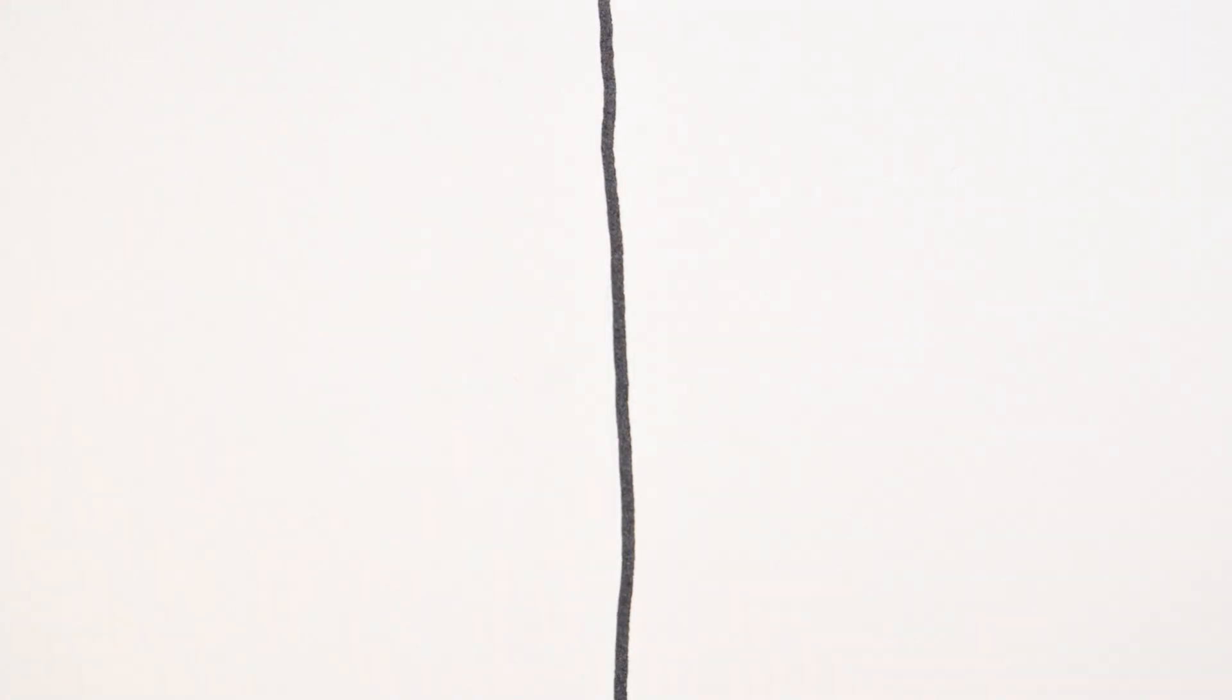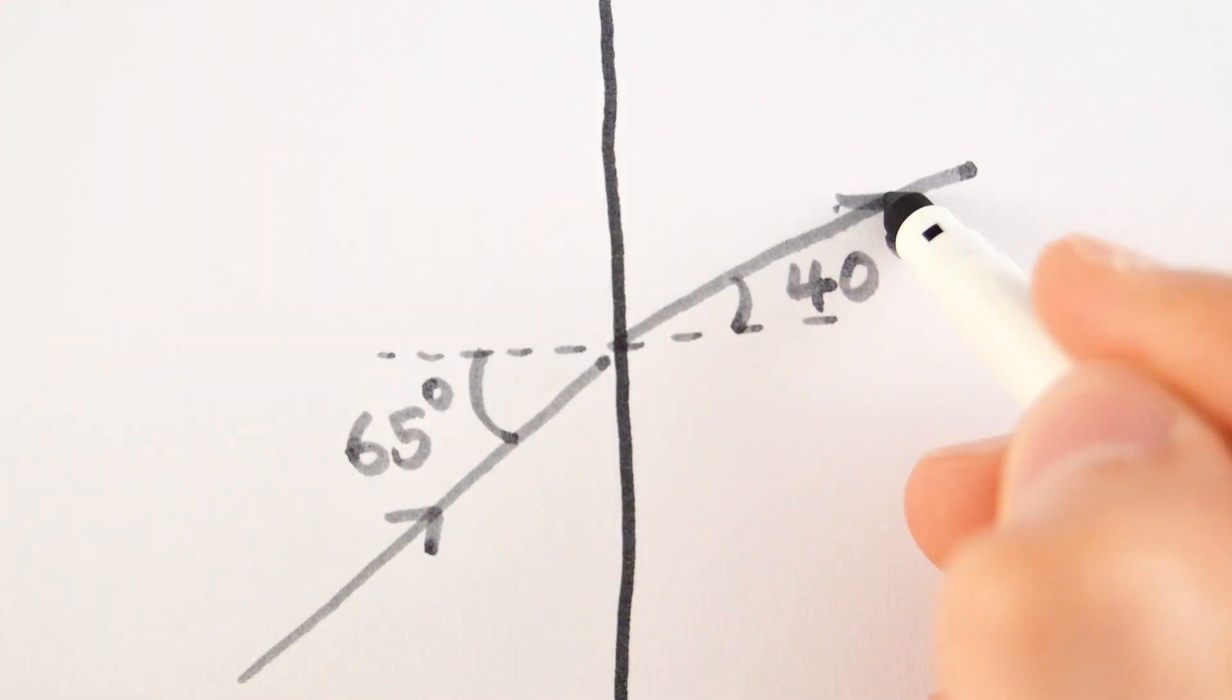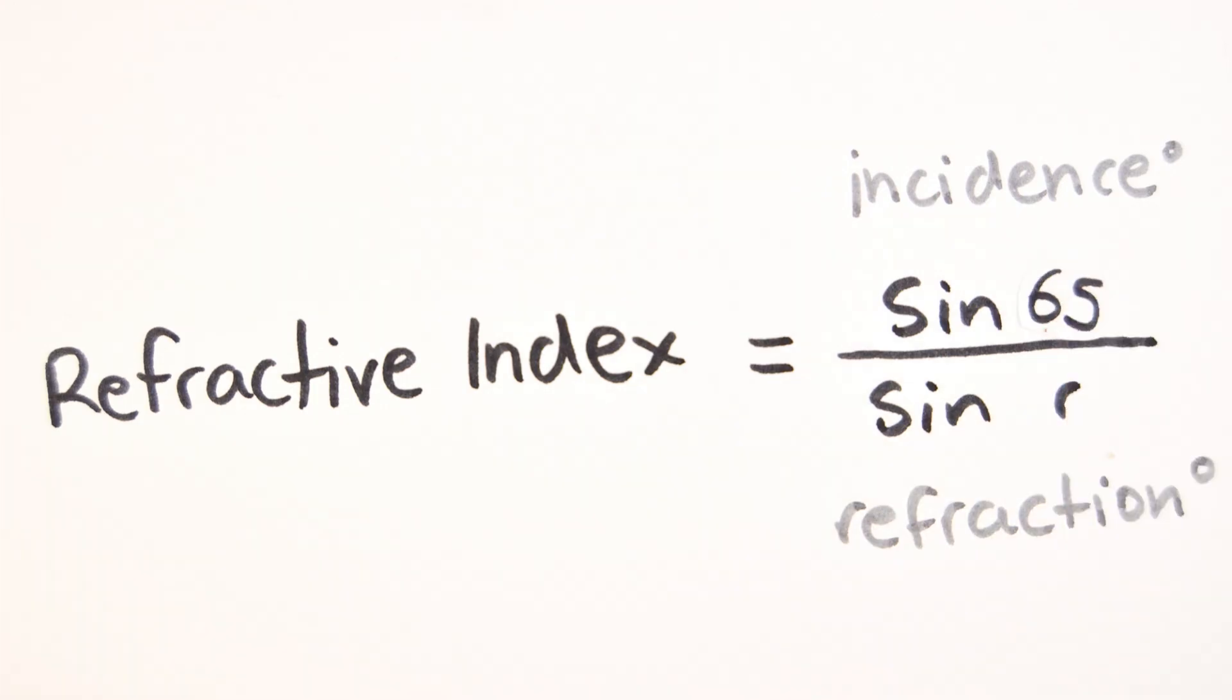Take this example where the angle of incidence is 65 degrees and the angle of refraction is 40 degrees. This gives us a refractive index of 1.41 and will bend the light towards the normal.